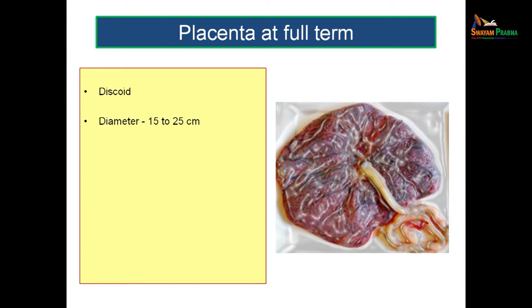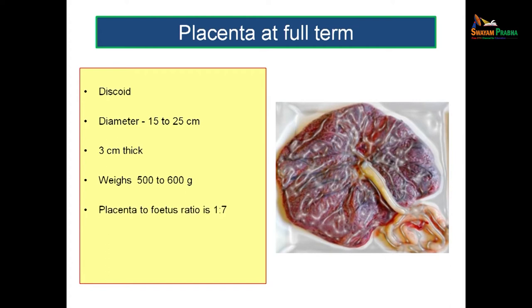When looking at a full-term placenta, it will look like a disc — discoid in shape. The diameter is roughly 15 to 25 centimeters, the thickness is roughly 3 centimeters, and the weight is roughly 500 to 600 grams. The ratio of the fetus to placenta is 1 to 7. This placenta is expelled approximately 30 minutes after birth of the child, which is why it is also known locally as the afterbirth.